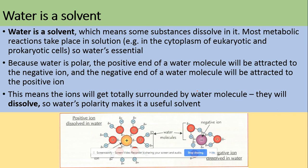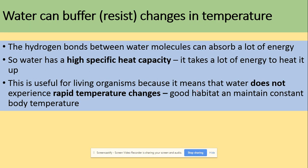Water is essential as a solvent because it is polar. The positive end of a water molecule is attracted to negative ions, and the negative end is attracted to positive ions. This means ions become totally surrounded by water molecules and dissolve. Water's polarity makes it a very useful solvent.